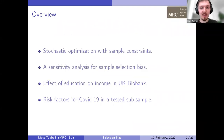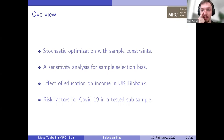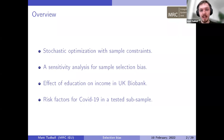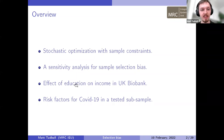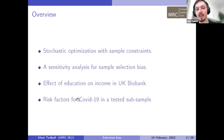A quick overview: the talk starts out quite technical and becomes progressively less so. I'll describe the general problem — stochastic optimization when we have to estimate the constraints — then how that applies to a sensitivity analysis for selection bias, and work through two examples: the effect of education on income in UK Biobank, and risk factors for COVID-19 among those tested.